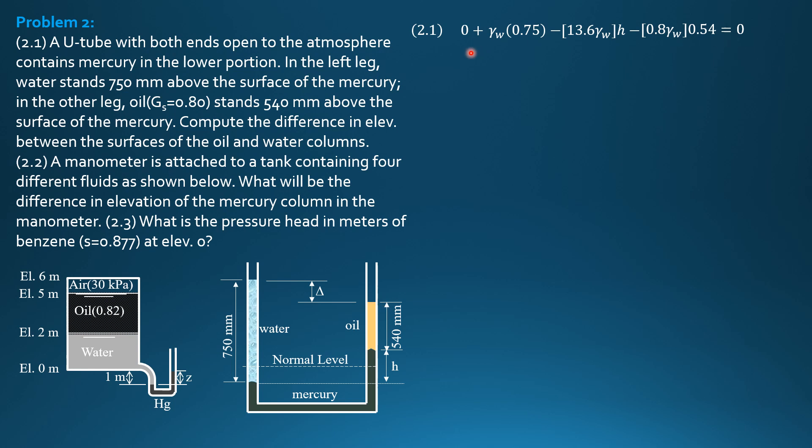We can divide everything by gamma of water, so we simplify this into 0.75 minus 0.8 times 0.54 equals 13.6 times H. Leaving H as the only unknown, so we can now solve for H, 0.02338 meter or in mm, 23.38 mm.